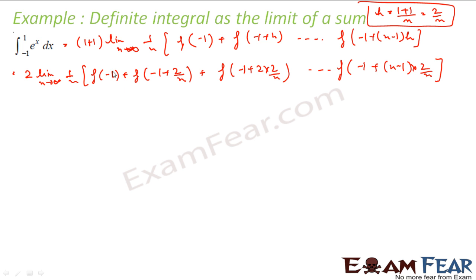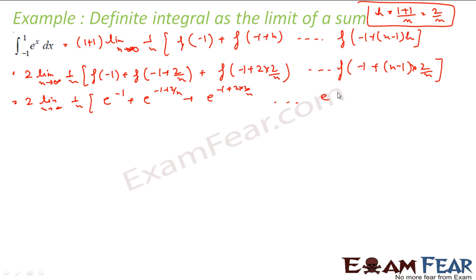So what is the value of f of minus 1? Let me write this. 2 into limit n tends to infinity, 1 by n: f of minus 1 is nothing but e to the power minus 1; f of minus 1 plus 2 by n is e to the power minus 1 plus 2 by n; this is e to the power minus 1 plus 2 times 2 by n; and so on up to e to the power minus 1 plus n minus 1 times 2 by n.